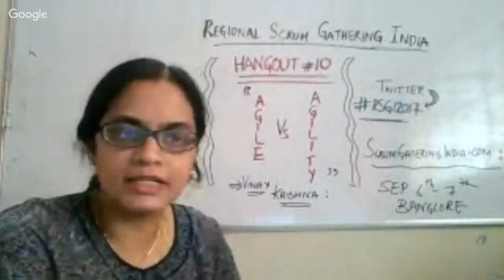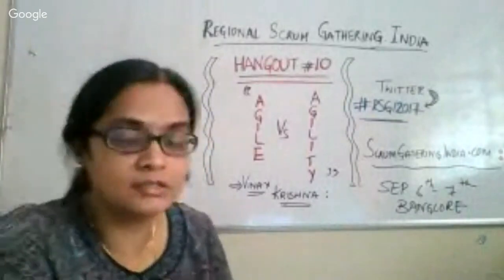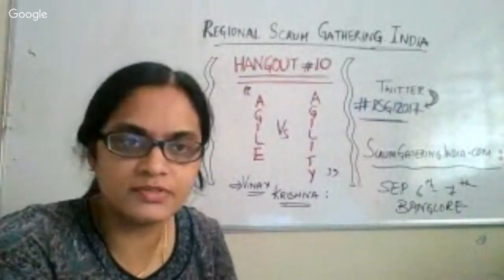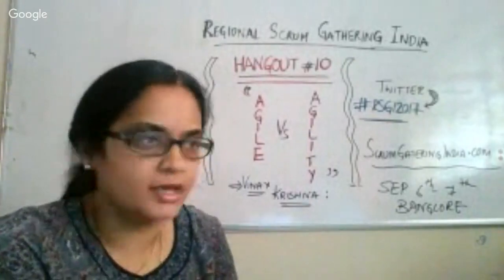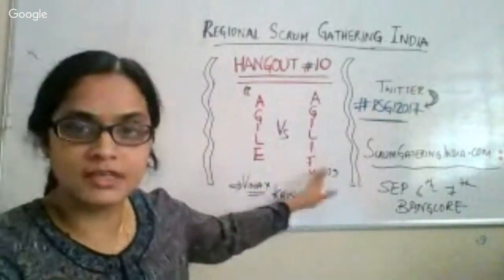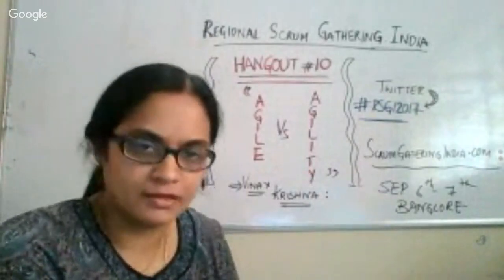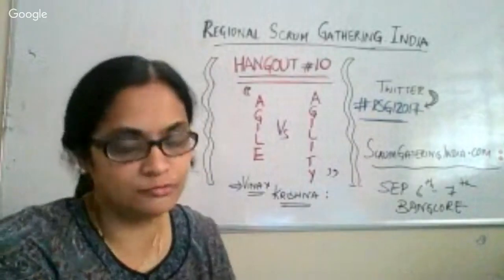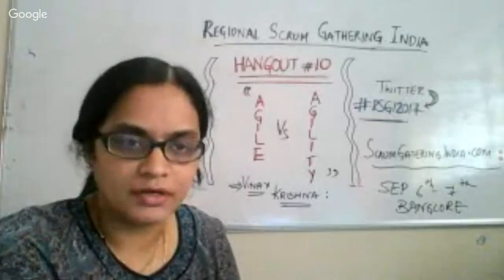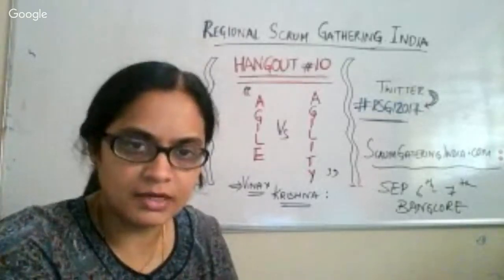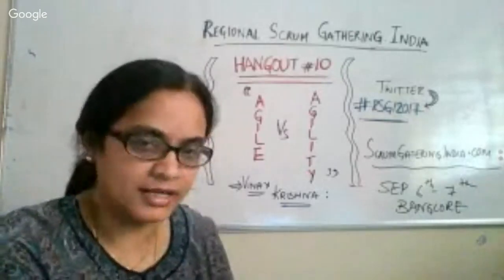Hello, everyone. I'm Madhavi, back on the Hangout series. This is episode 10 of the Rachel Scrum Gathering Hangout series. Today we have Vinay Krishna with us, and the topic of the hangout is Agile versus Agility. I'm Madhavi, from Hyderabad, and I work as an Agile coach for an organization called ADP in Hyderabad. I'm one of the volunteers for the Rachel Scrum Gathering and hence facilitating these Hangouts.